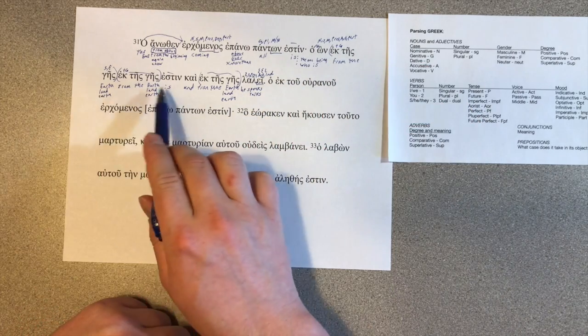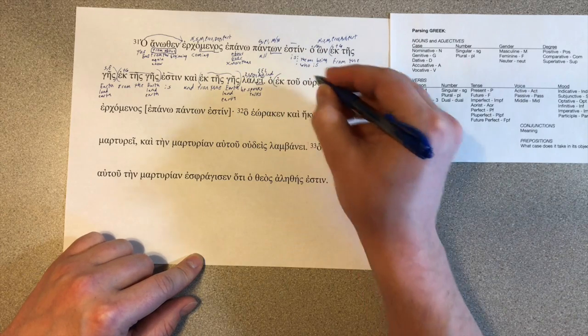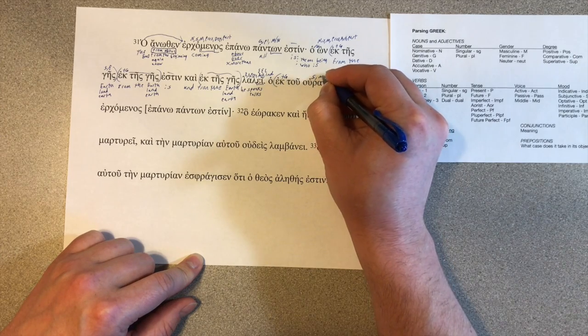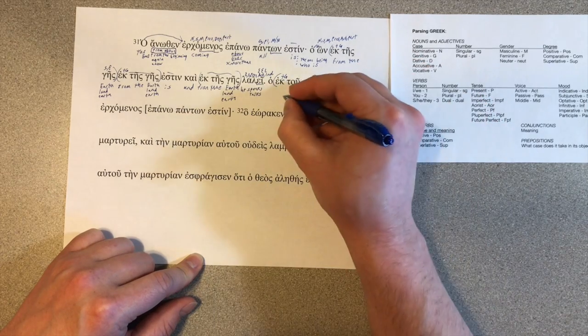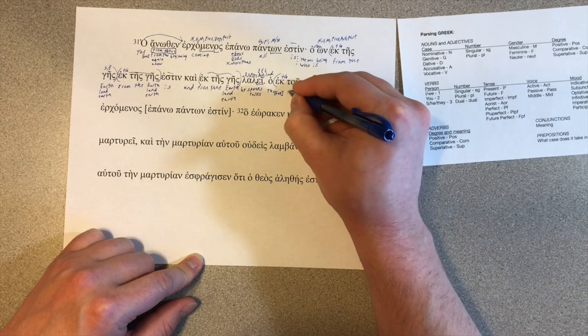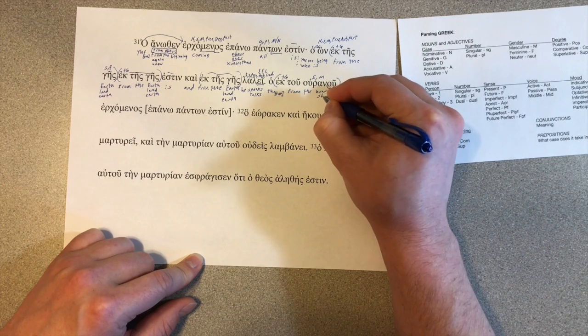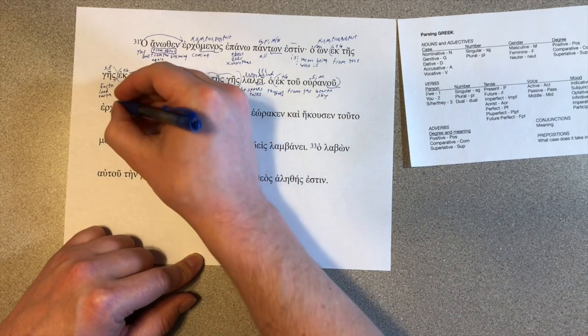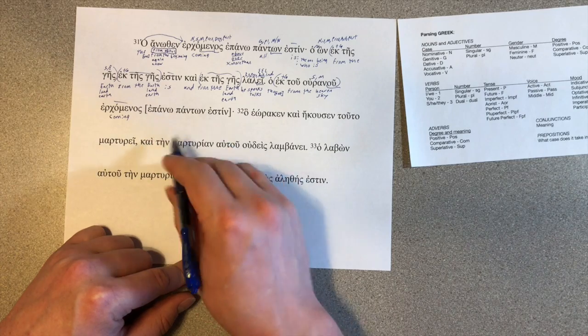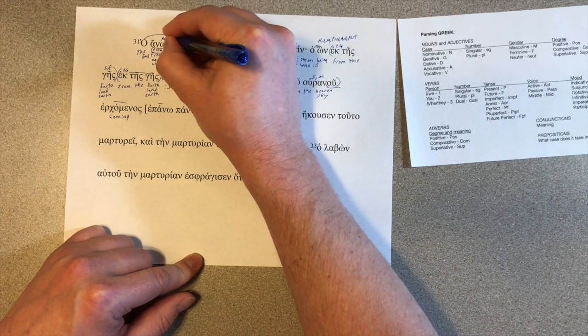The one being from the earth is from the earth, and he speaks or he talks from the earth. Ek, prepositional phrase plus the genitive. Tu uranu, singular, and this is masculine right there. So it closes off. The one is going to be the same construction, from the heaven or sky. Erkomenos, seen that before. Epano ponton esten, we've seen all these. No need to parse them again. Although I didn't mark that adverb. Now we don't need a person. Above or over all is.